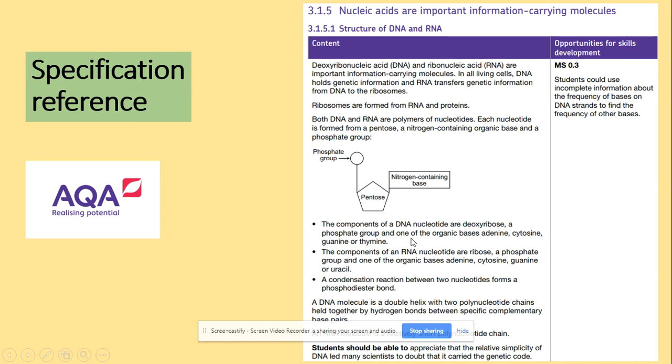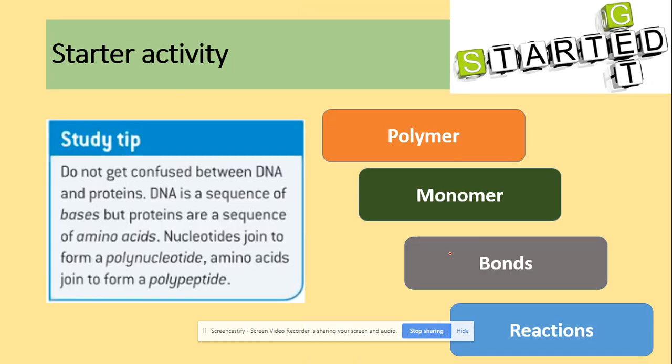Also we will be looking at the condensation reaction of nucleotides that will form a phosphodiester bond. Okay, so in terms of terminology you should be aware of from before: polymer, monomer, bond, and condensation and hydrolysis reactions. We're bringing those again and we need to apply the new knowledge about DNA and RNA.